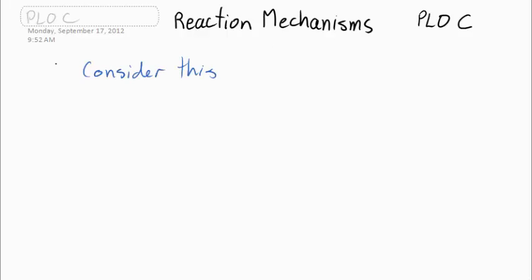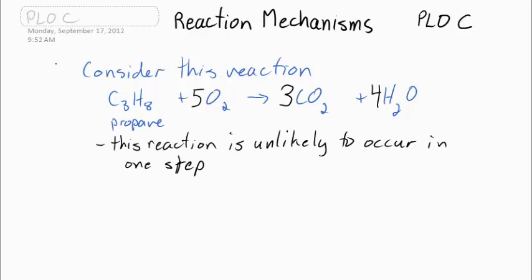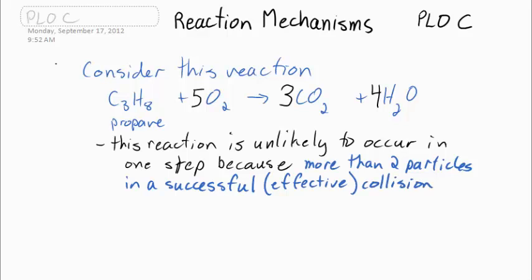Consider this reaction between propane and oxygen. It makes carbon dioxide and water. Balancing shows that one molecule of propane has to react or collide with five of oxygen. It's unlikely to happen this way. Reactions usually happen in two particle, maybe three particle collisions. A six particle collision is unlikely.